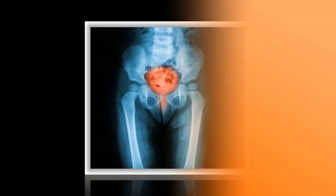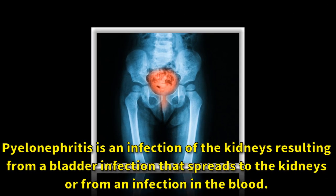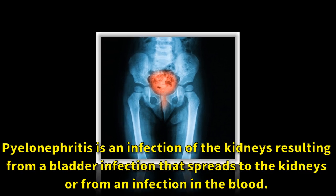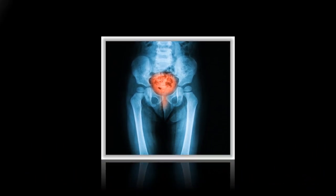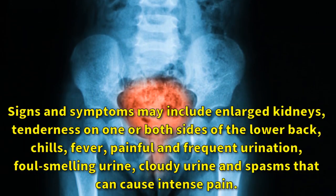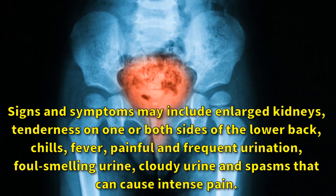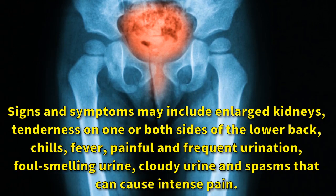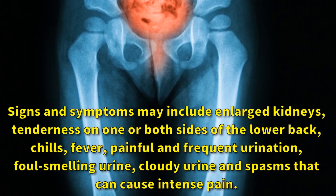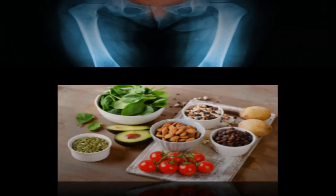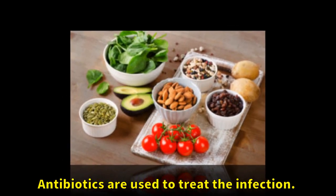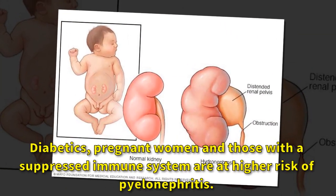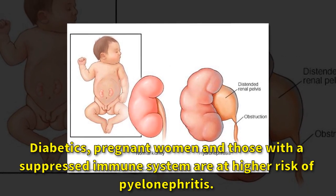Pyelonephritis is an infection of the kidneys resulting from a bladder infection that spreads to the kidneys, or from an infection in the blood. Signs and symptoms may include enlarged kidneys, tenderness on one or both sides of the lower back, chills, fever, painful and frequent urination, foul-smelling urine, cloudy urine, and spasms that can cause intense pain. Antibiotics are used to treat the infection. Diabetics, pregnant women, and those with a suppressed immune system are at higher risk of pyelonephritis.